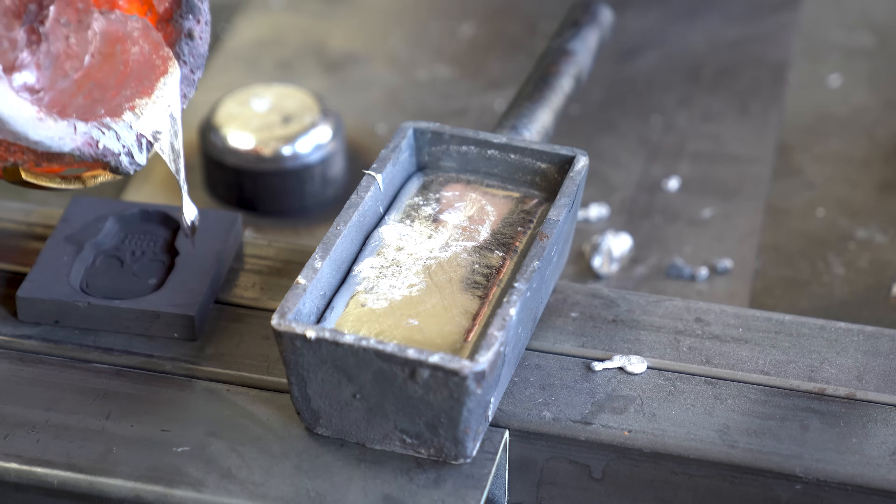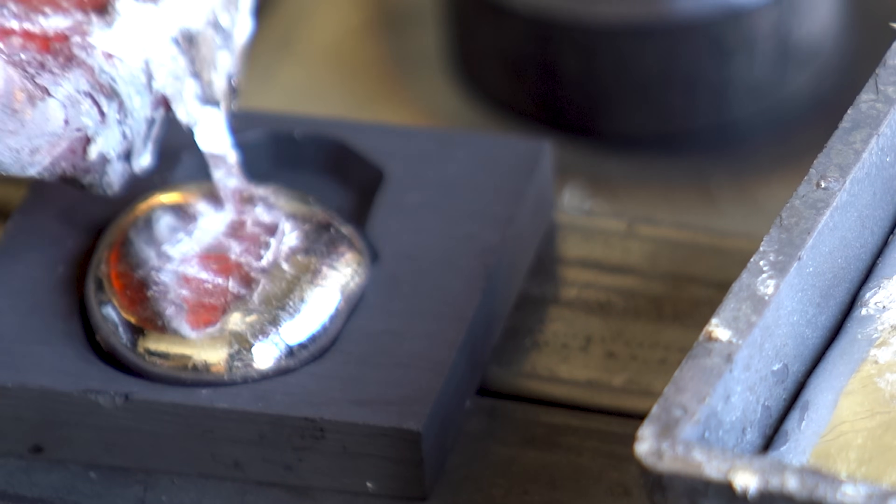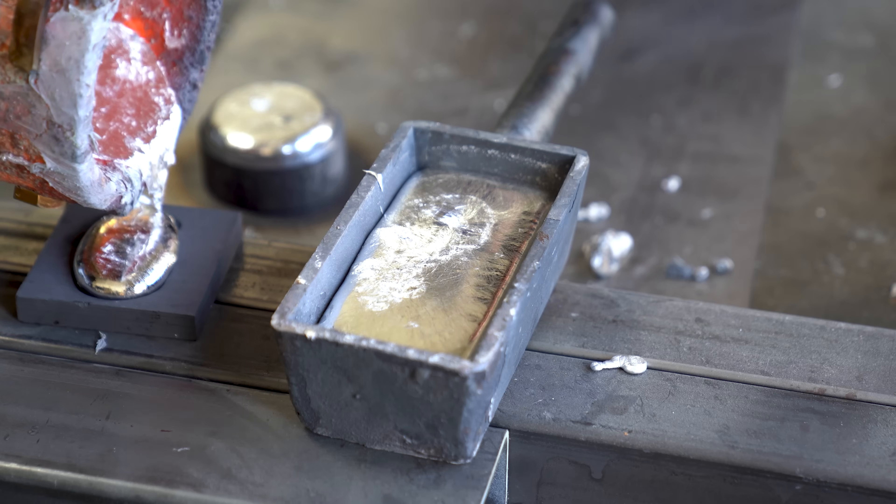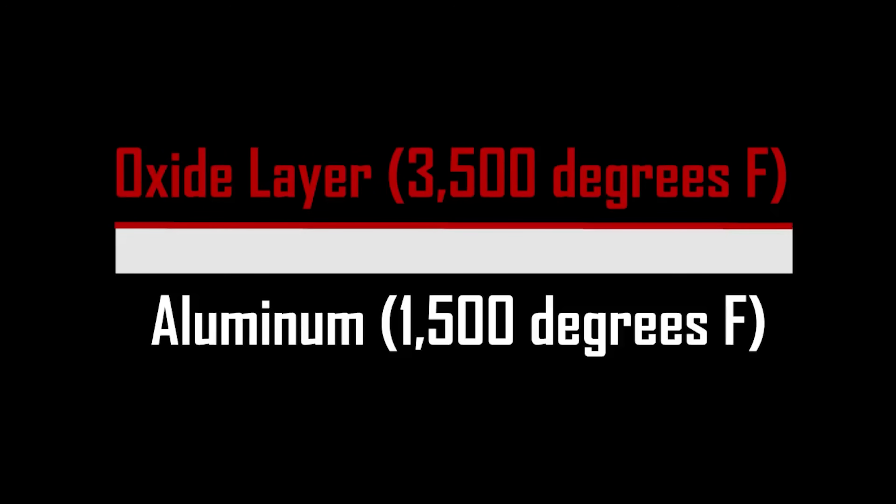Notice how the aluminum kind of looks frozen on the outside, but the mold still fills up? That's the oxide layer, forming basically a tube for the core layer to flow through. It's actually what makes aluminum such a tricky and unique metal to weld, because that always-present oxide layer has a melting point that is higher than the core metal that it protects.